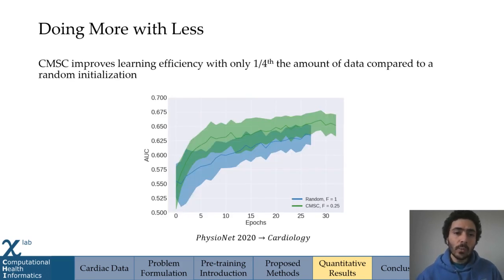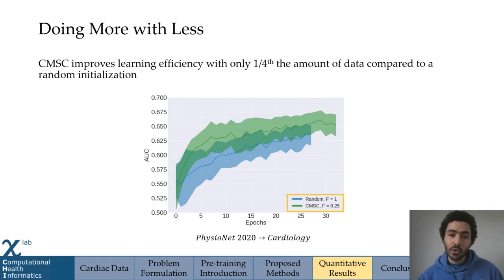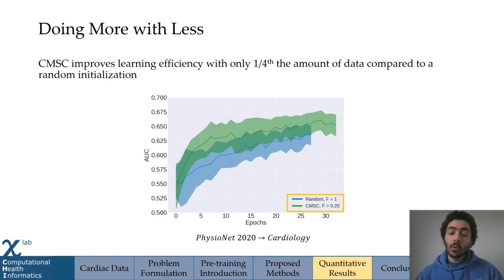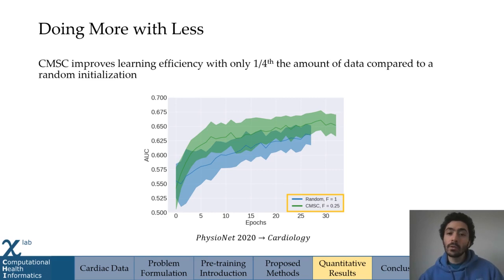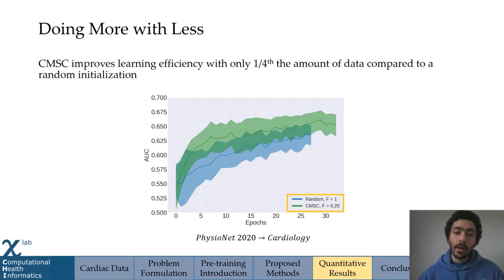We also wanted to show that we can do more with less. Here are the learning curves of two networks: one randomly initialized with access to 100% of the data (F equals 1), and our approach CMSC with access to only 25% of the data, shown in green. Our approach not only learns faster but better with just a quarter of the data, representing a fourfold increase in label efficiency.